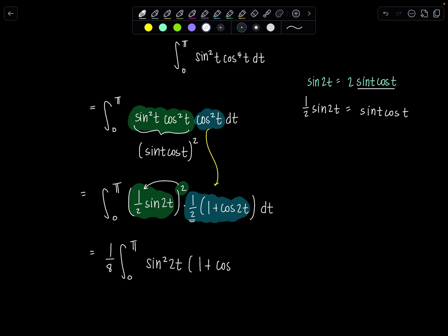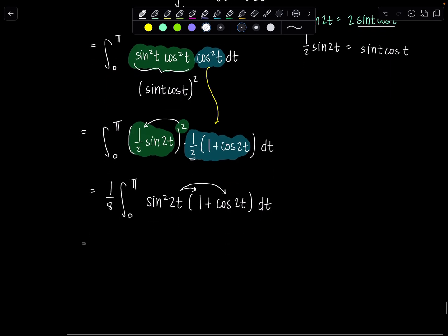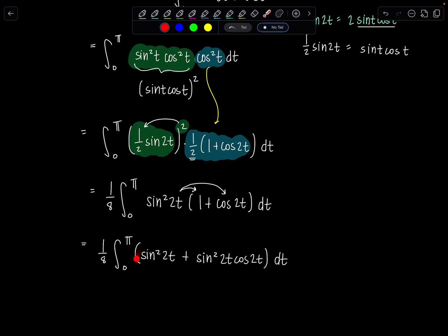And then from here we're pretty much home free from the tricky part. I'm going to distribute sine squared 2t and we'll tackle this one term at a time. So one eighth integral zero to pi sine squared 2t plus sine squared 2t cosine 2t dt. Now at a quick glance I see sine squared all by itself. I'm going to use the half angle identity to evaluate the antiderivative. Here I have sine squared but thankfully I have an odd power of cosine. So that will let me do a u sub.